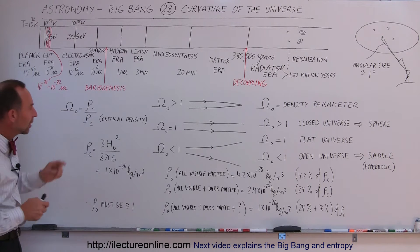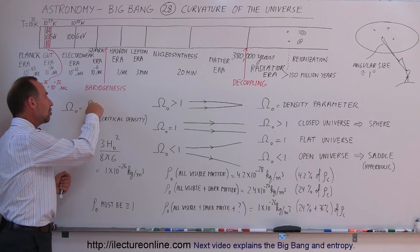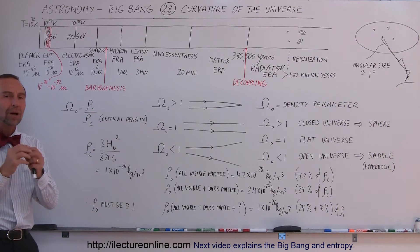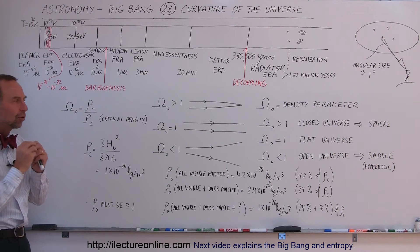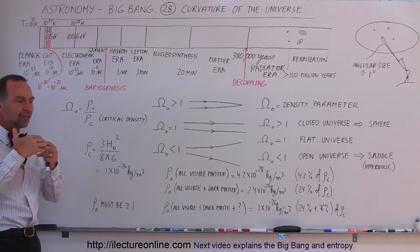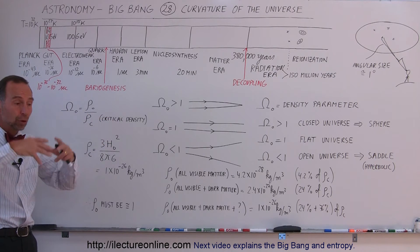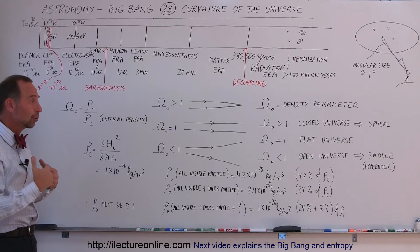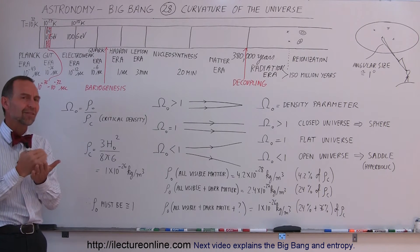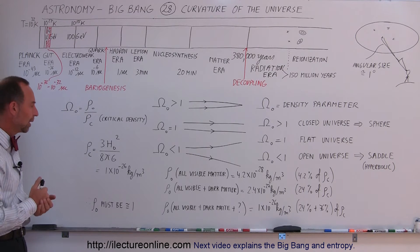The density parameter is the density measured in the universe divided by the critical density. What density does the universe need so that if the measured density is greater than that, the universe would be closed, and if it's less, the universe would be open? What is that critical density to which you want to compare the measurements?